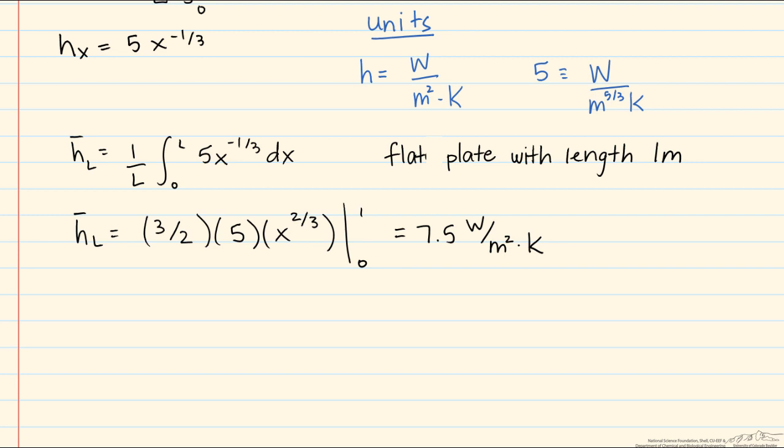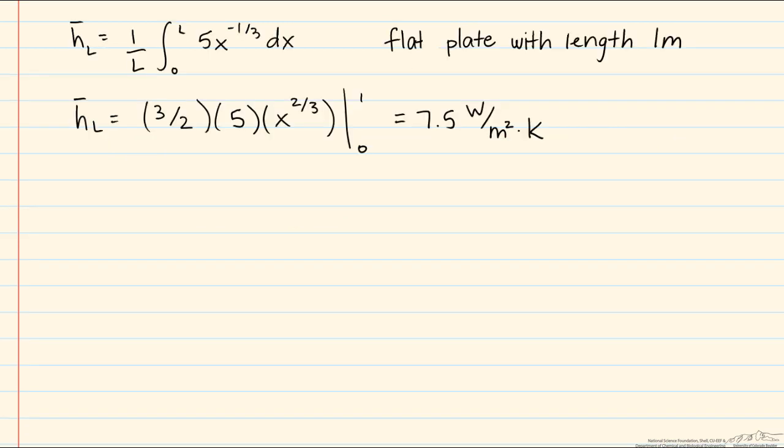Why don't we look now at the local heat transfer coefficient along the plate. So we're going to look at 0.1 meters, 0.2 meters, and this is from what's known as the leading edge of the plate, 0.3 meters all the way down to 0.9 and 1.0 meters.